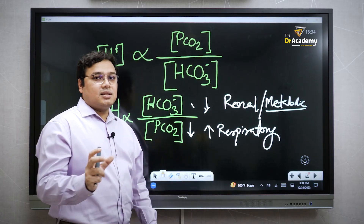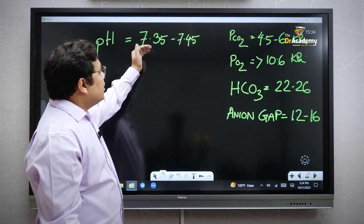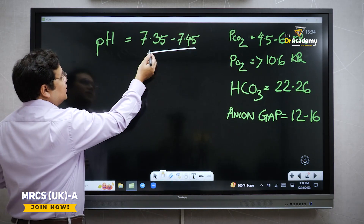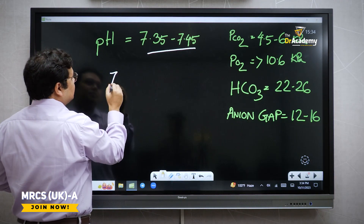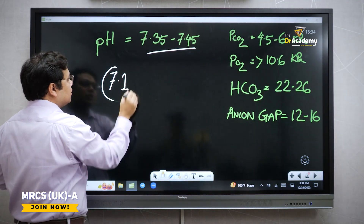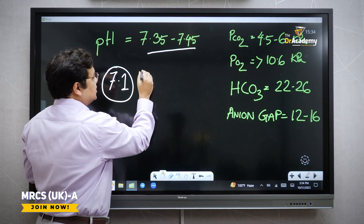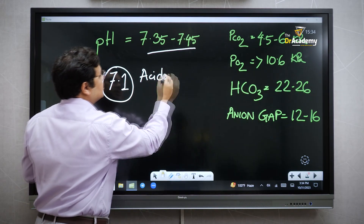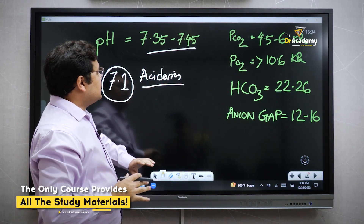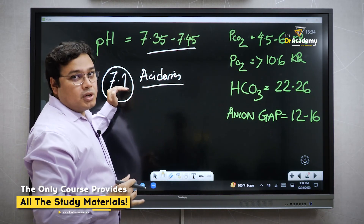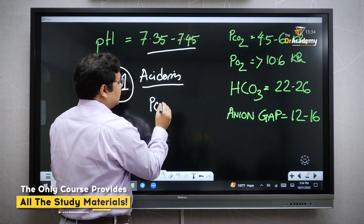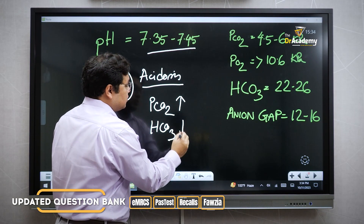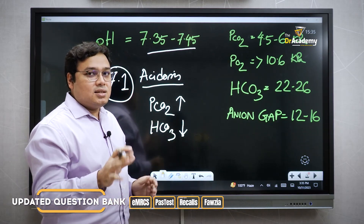The first thing we decide is the pH value. The normal pH range is 7.35 to 7.45. In a scenario, if the pH is less than 7.35 — for example 7.1 — the first diagnosis is acidosis. It doesn't matter yet whether it is respiratory or metabolic; first, this is acidosis. Then to understand what caused pH to fall from 7.4, we look at whether CO2 is high or bicarbonate is low.